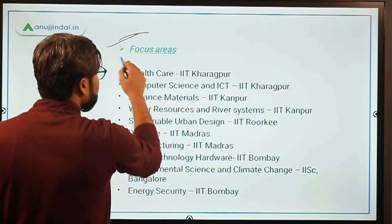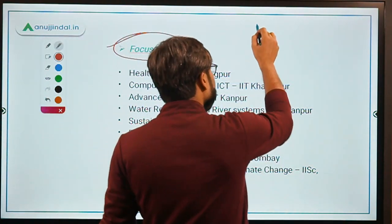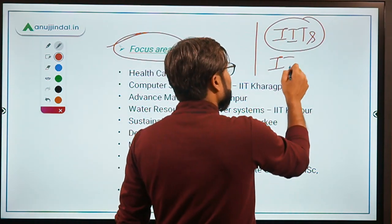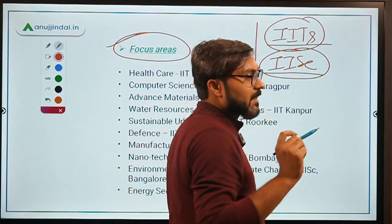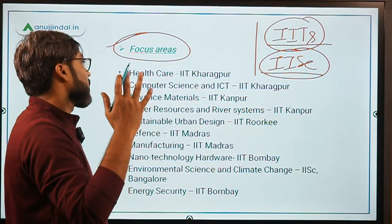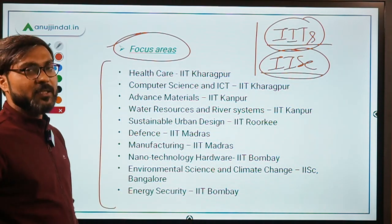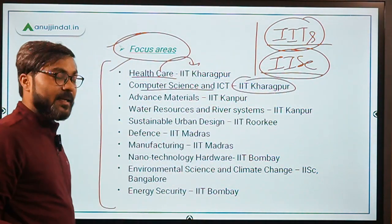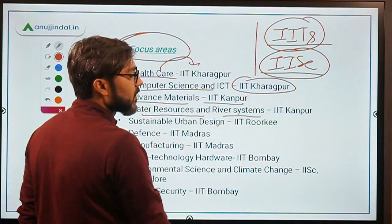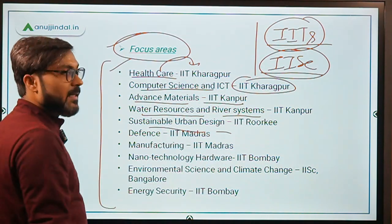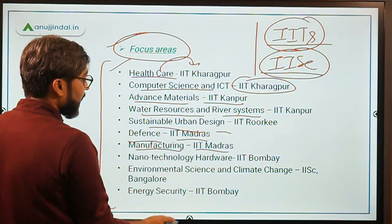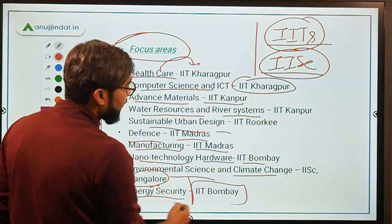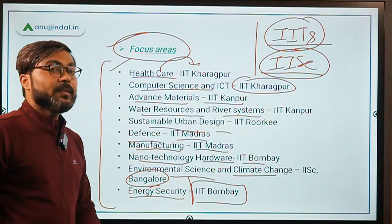Under IMPRINT India, two types of institutions are included: IITs and IISc. The focus areas and their lead institutions are as follows — Healthcare and Computer Science & ICT: IIT Kharagpur; Advanced Materials and Water Resources & River Systems: IIT Kanpur; Sustainable Urban Design: IIT Roorkee; Defence and Manufacturing: IIT Madras; Nanotechnology Hardware: IIT Bombay; Environmental Science and Climate Change: IISc Bangalore; and Energy Security: IIT Bombay.